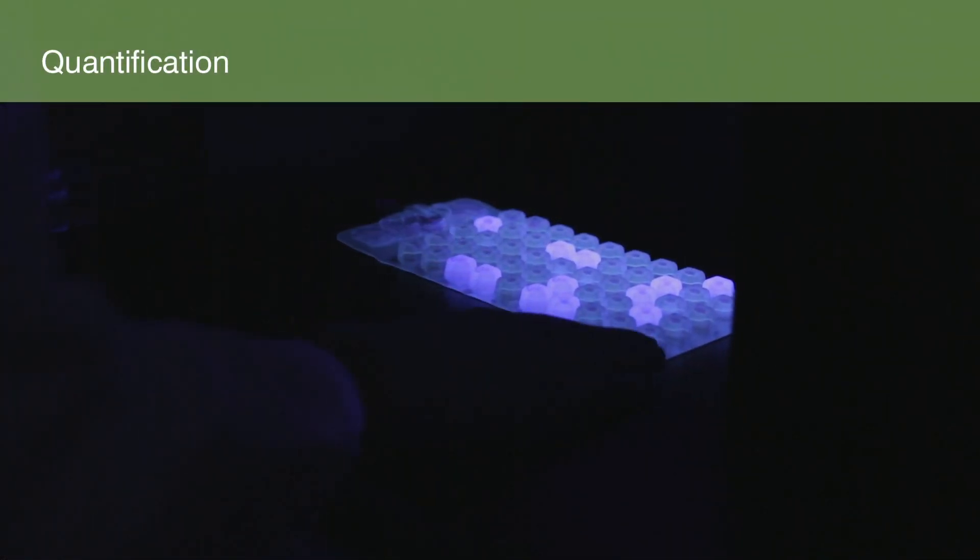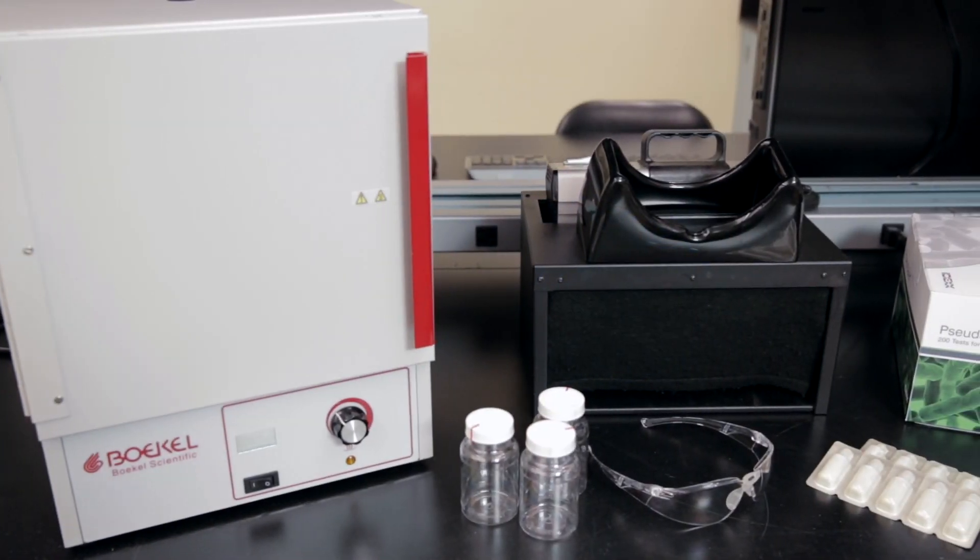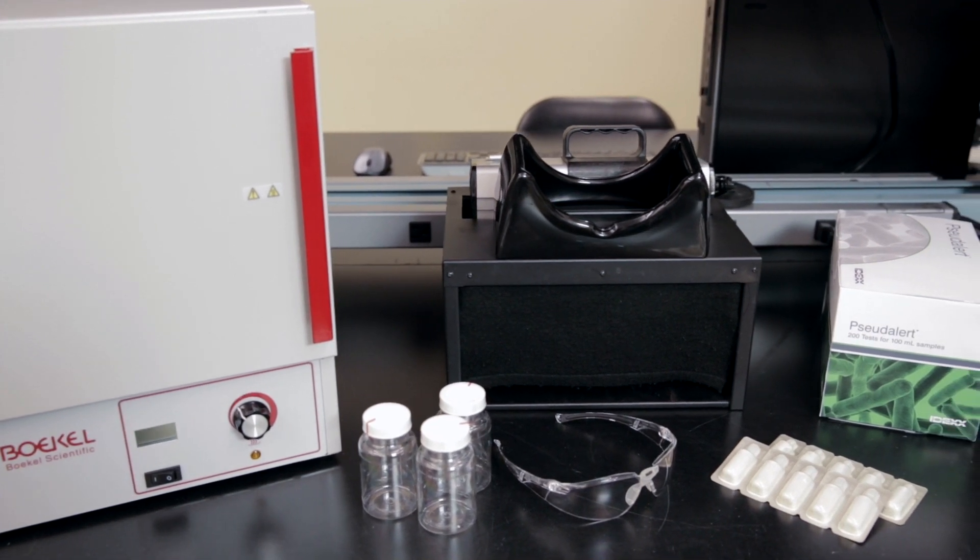Next, you'll learn how to use Pseudalert with the Quantitray method to determine the most probable number of Pseudomonas aeruginosa. You'll need a 100 ml vessel and the other materials used for presence-absence detection.